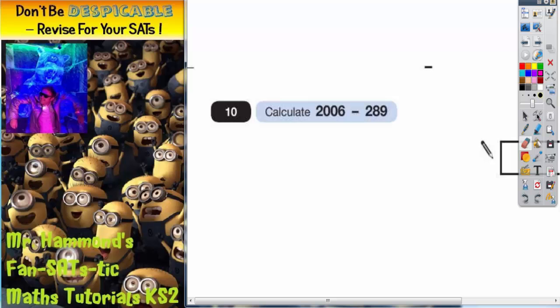And in fact it might be a good idea to write your column headings first, so we've got thousands, hundreds, tens, and units.